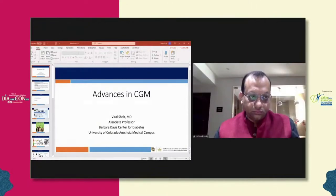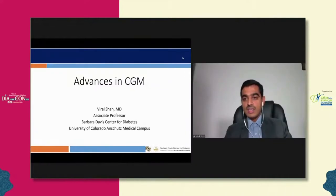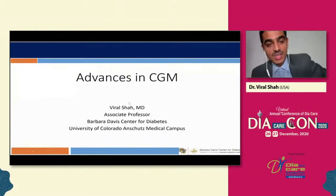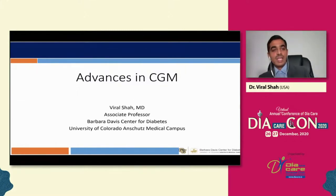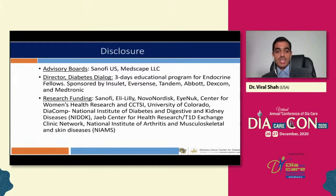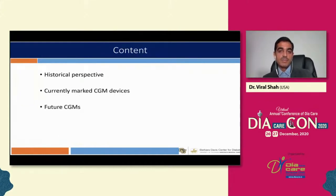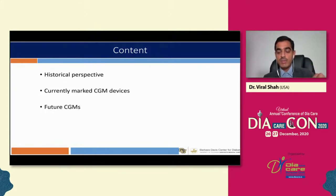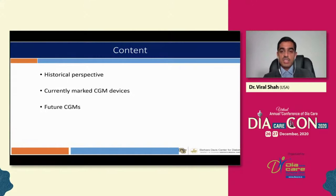Dr. Shah noted he's from Denver, so it's 9 PM for him — a two-hour difference from the East Coast. He presented his disclosures, noting they're not particularly relevant. He outlined today's talk: briefly touching on the historical aspects of CGM, then discussing currently available CGMs — mainly from the US market — and finally a brief look at what the future holds.